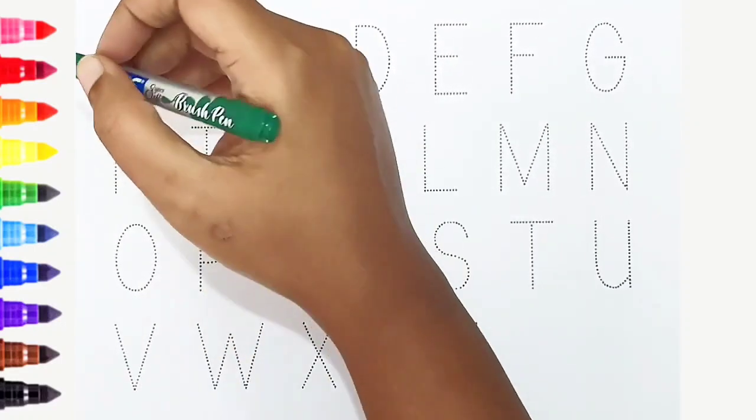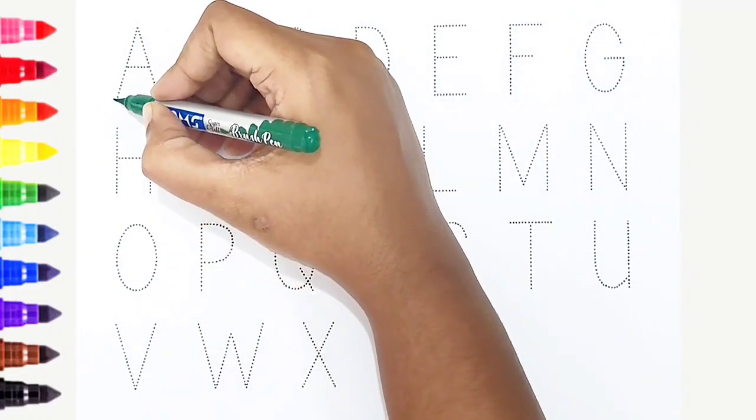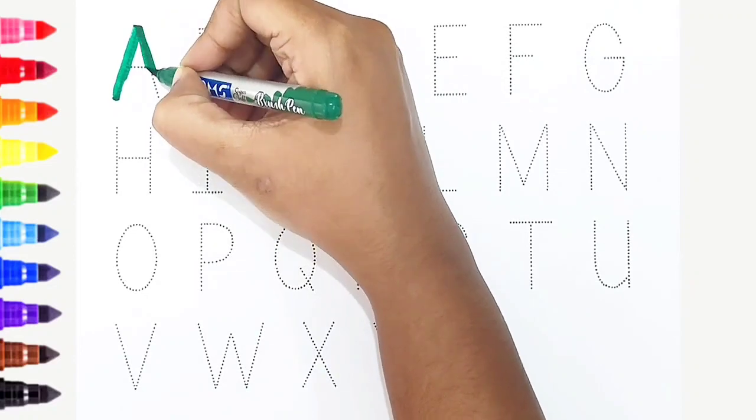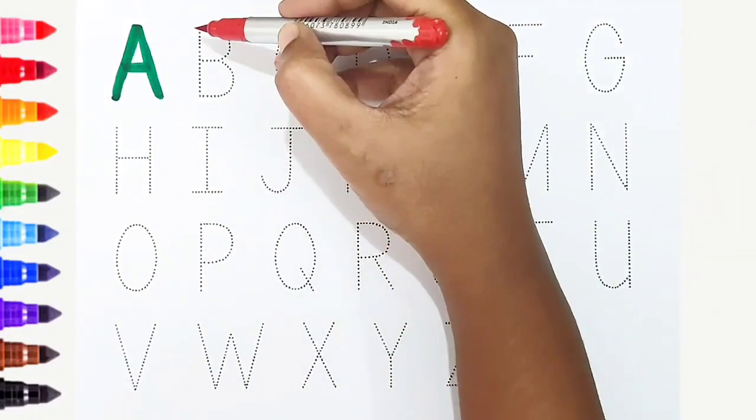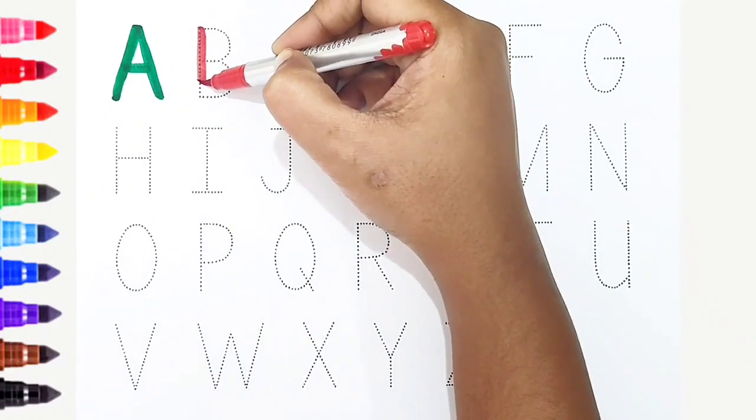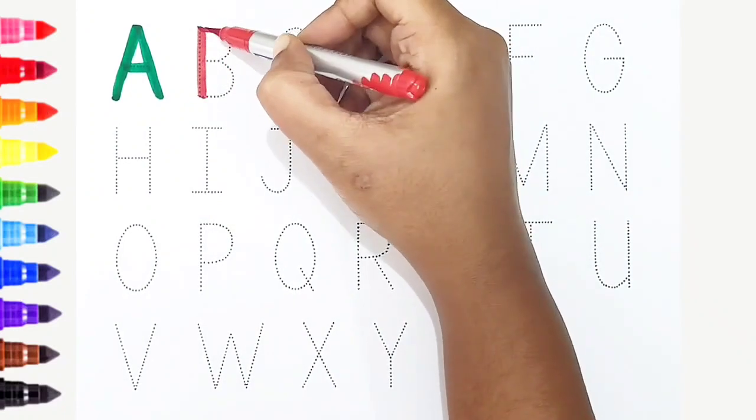A, dark green color. A is for aeroplane. B, red color. B is for buffalo.